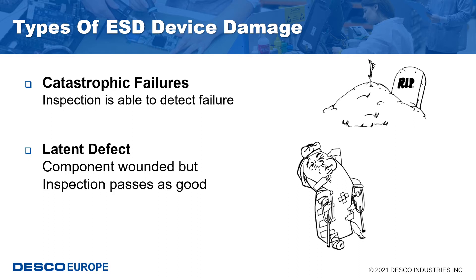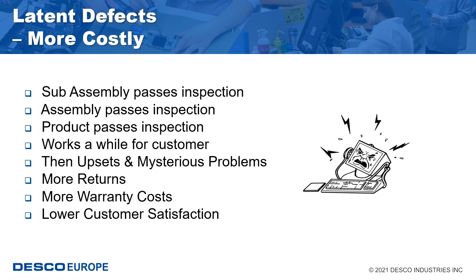The cost for repair increases as detection of the failure moves through the system. Electrostatic damage to electronic devices can occur at any point, from the manufacture of the device to field service of systems. Damage results from handling the device in uncontrolled surroundings or when poor ESD control practices are used. Generally, damage can manifest itself as a catastrophic failure, a parametric change, or an undetected parametric change, which is a latent defect.